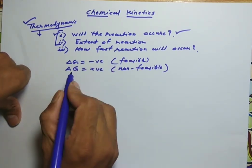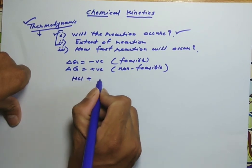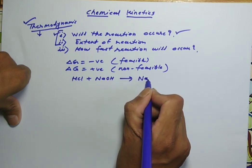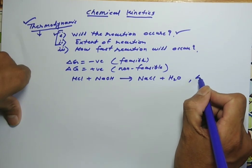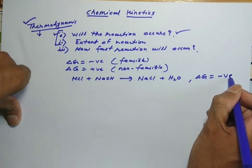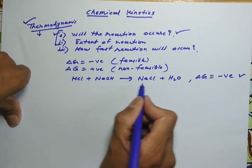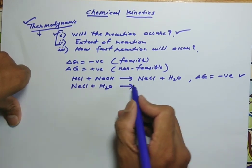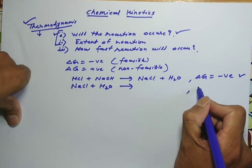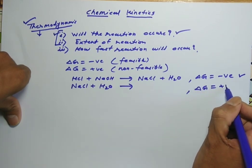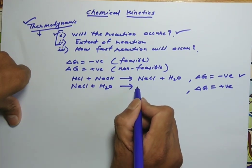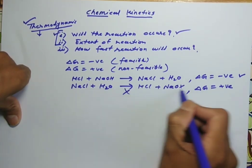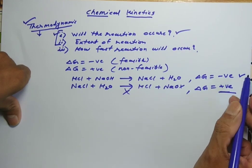If delta G is positive, the reaction is non-feasible and does not occur. For example, hydrochloric acid reacting with NaOH spontaneously converts into NaCl and H₂O — delta G is negative, so this reaction occurs. But the reverse reaction, where sodium chloride is added to water and expected to give NaOH, does not take place because delta G is positive.